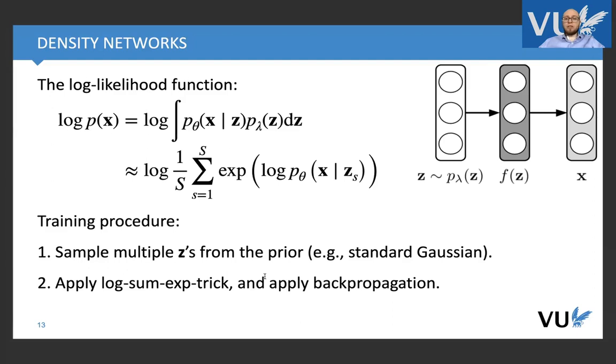We take a flexible model, namely the neural network, and training procedure is very simple, we just sample a lot of z's from the prior, for instance, standard Gaussian, then we apply log-sum-exp trick, and we calculate weights of the decoder or generator using backpropagation, right? It seems to be very simple, and in fact it is.